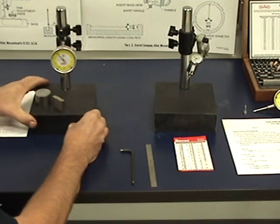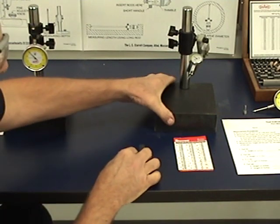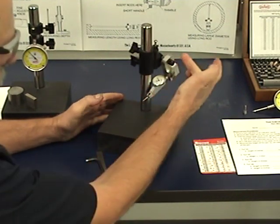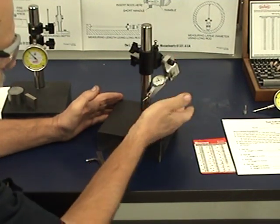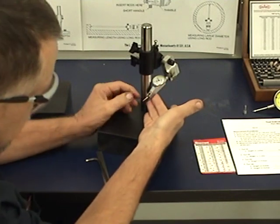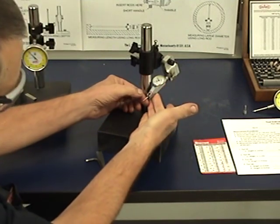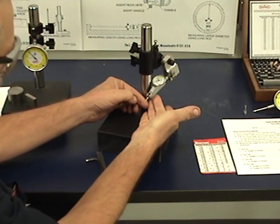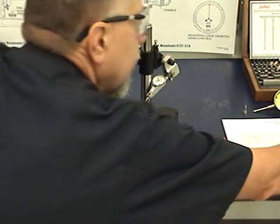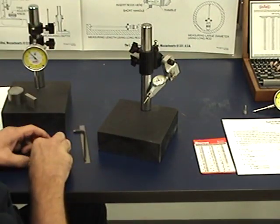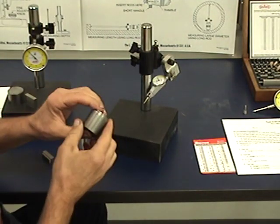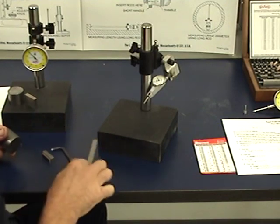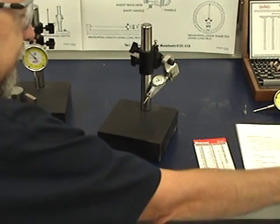So now what I want to do is show you a little bit about the test indicator. We're in the process of making some new test indicator holders back here, but this one will do fine for what we're doing. Usually you want your indicator, you want your tip about twenty degrees down. And so what we're going to do now, we're going to test a part. We're going to test part number nine.